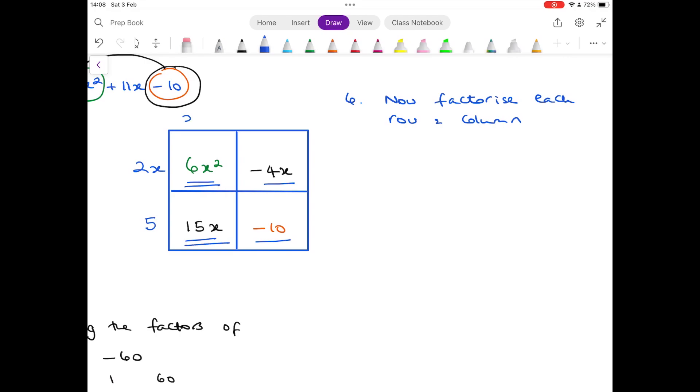15x minus 10 is 5. Common factors of 6x squared and 15x is 3x and finally minus 2. So the two brackets you want are 3x minus 2 and 2x plus 5.